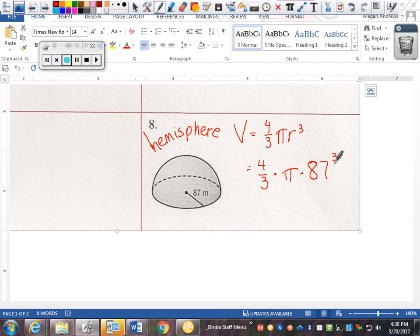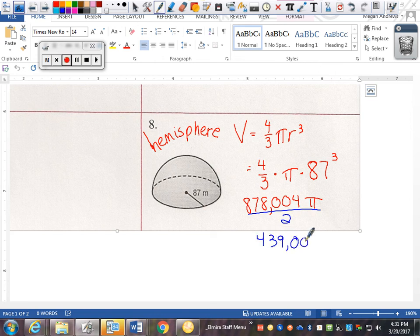And I get 878,004 pi. But that represents the entire sphere. So, I only want half of a sphere. So, I would take this and divide by two. And I would get 439,002 pi for my pi answer. Then multiply that by pi and get 1,379,165.5. That's one way of doing it.